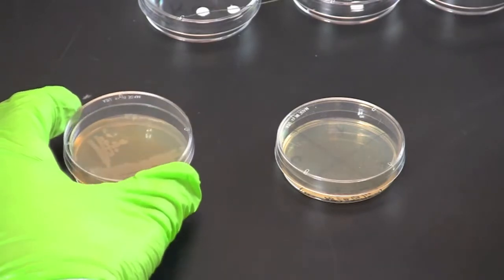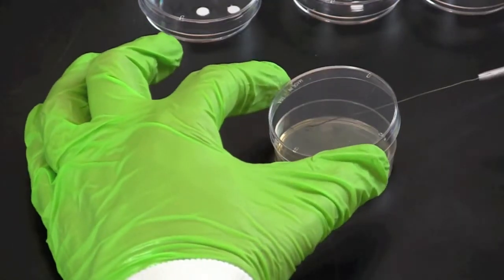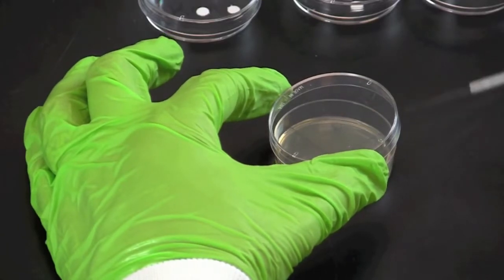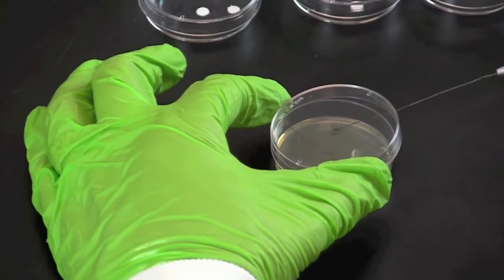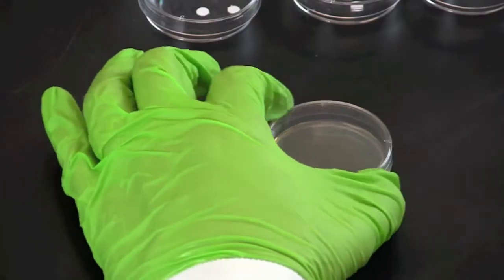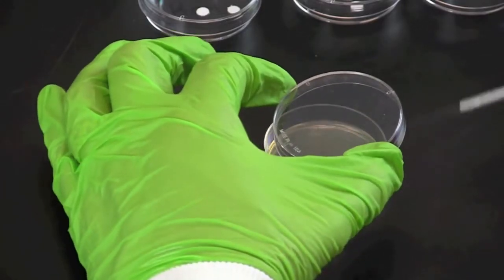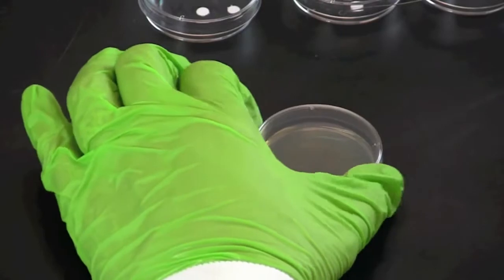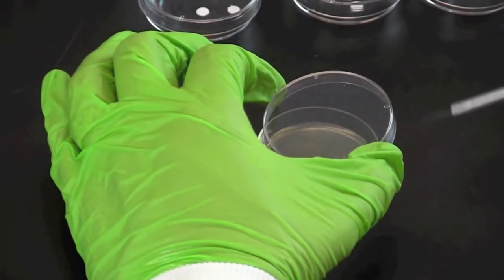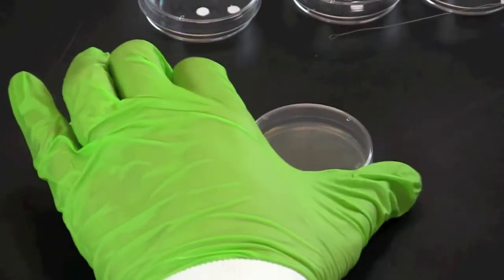Gently scrape the colony from the surface of the plate so that it collects on the loop. Transfer the bacteria to your prepared plate. Spread the bacteria over the entire surface of the plate in all directions. Rotating the plate a quarter turn between spreads will ensure that the bacteria is spread evenly across the plate.